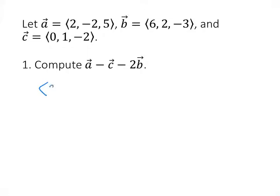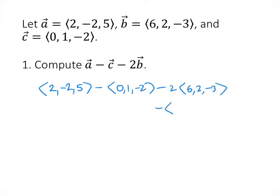We're going to use the same rules that we used for vectors in two dimensions; we just have a third component to worry about. First, we're going to multiply the 2 by vector B, which just means we're going to double each of B's components, so we get (12, 4, -6).